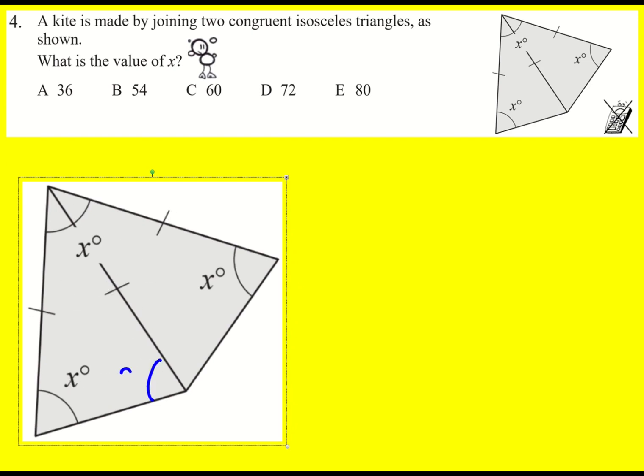Now actually we can say that that is also x because we have this isosceles triangle on the left and this is x as well. And in fact we then have the angles in the overall quadrilateral.